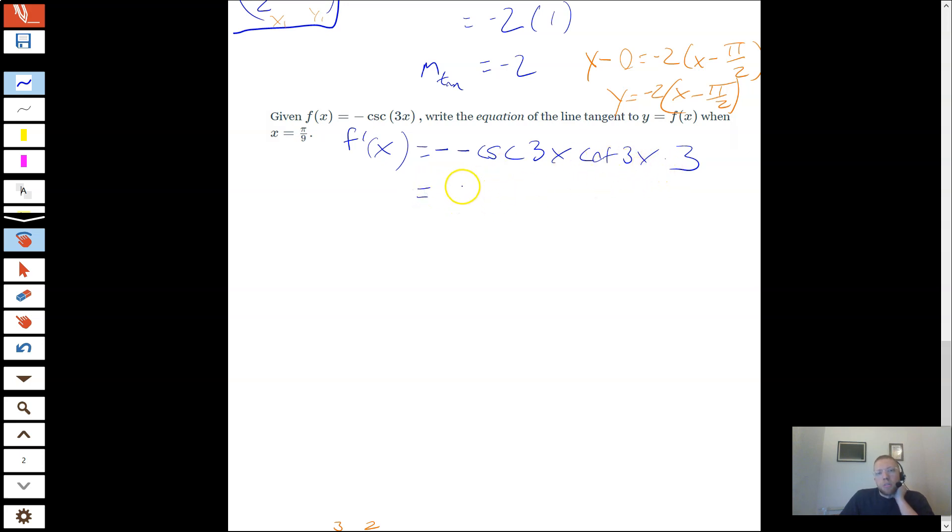So already you see my derivative is a little bit uglier. I should simplify that a little bit. So negative negative becomes a positive. And I'll bring that 3 out front just because it looks nicer. 3csc(3x)cot(3x). So that's my derivative. That's f'(x).